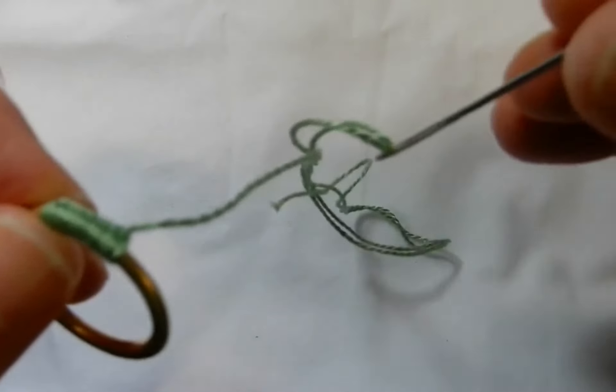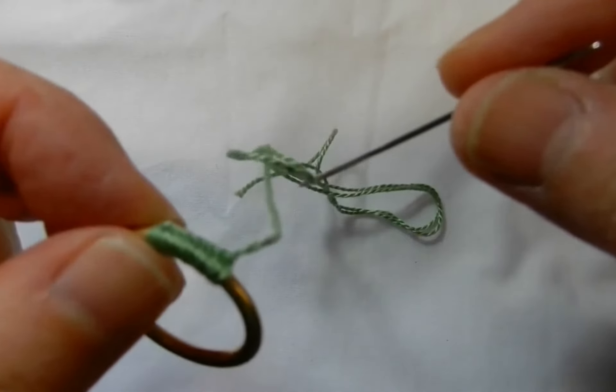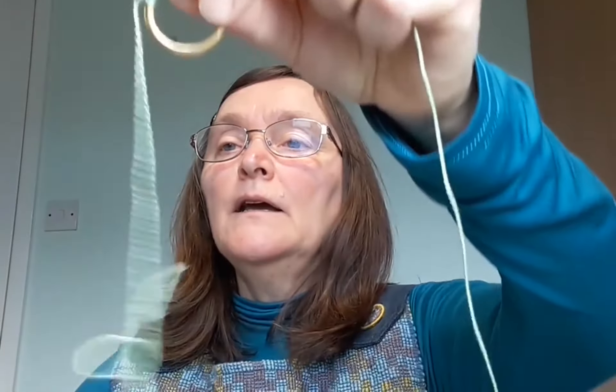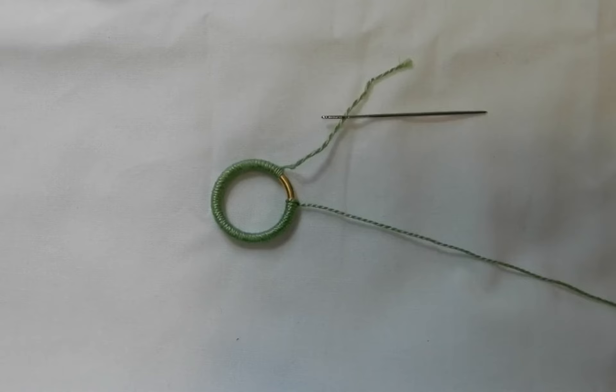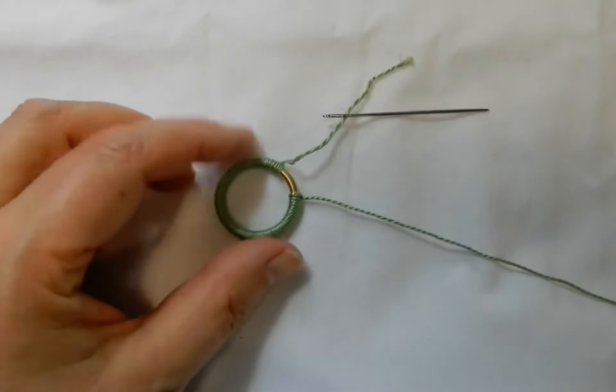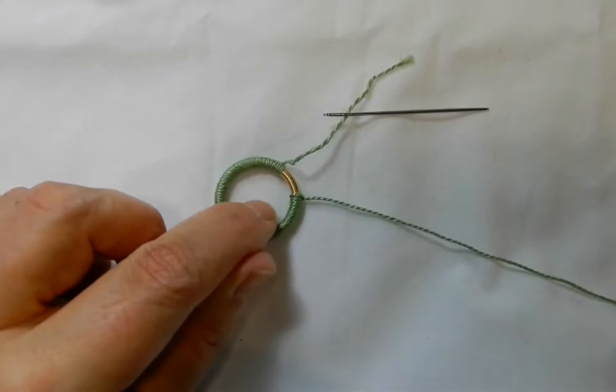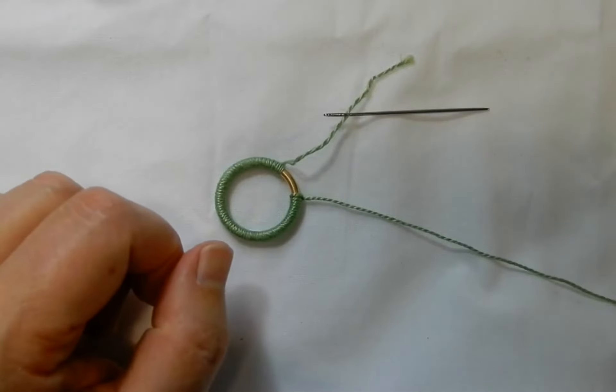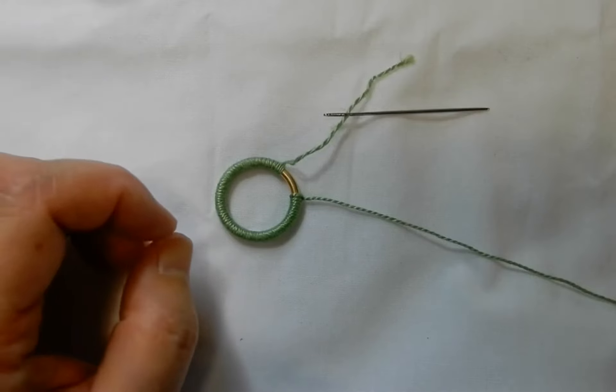As you do that, you'll probably build up a bit of twist in your thread. Just let the needle dangle and it'll untwist. Carry on until either the thread you're working with is about to run out or you've got just a little gap, about a third of an inch or three-quarters of a centimeter.